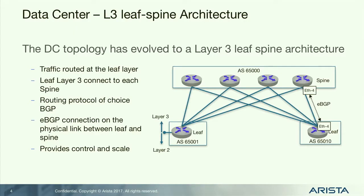If you're not already familiar, next generation data centers use a layer 3 infrastructure — what we term a layer 3 leaf-spine architecture. You have a leaf, or top-of-rack switch, that connects to the spine. To provide resiliency you have multiple spines — in this case four. The key point is that the connection between the leaf and the spine is layer 3.